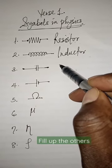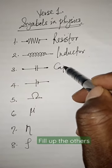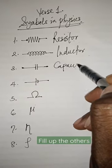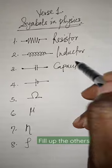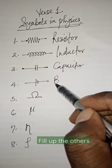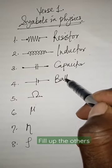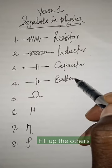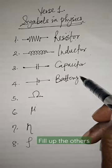This is for what? Capacitor. This is for what? Battery or cell. Whichever one you call, you're correct.